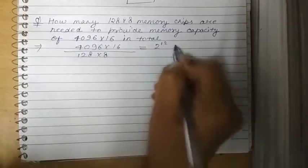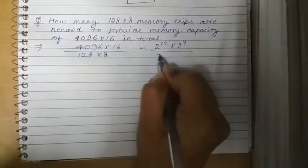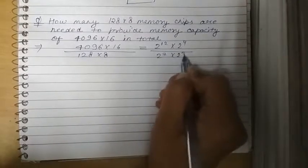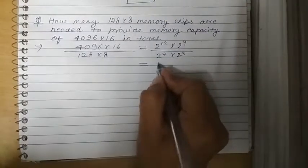Like this: 2 raised to power 12 into 2 raised to power 4, divided by 2 raised to power 7 into 2 raised to power 3. If you cut it, it will become 2 raised to power 6.